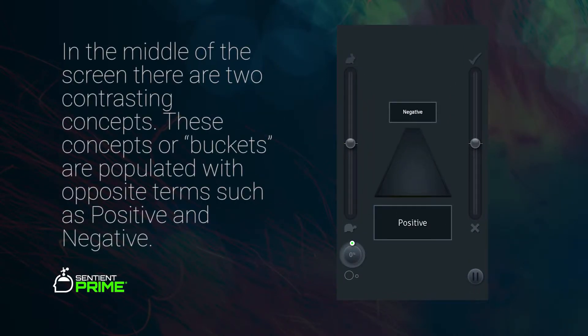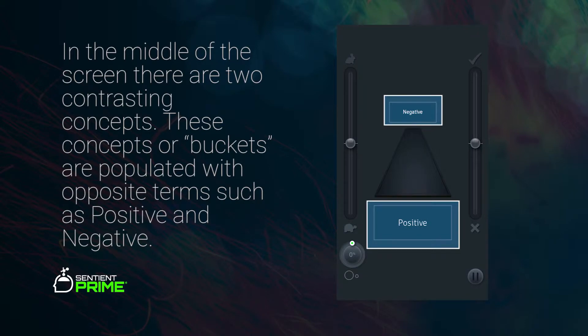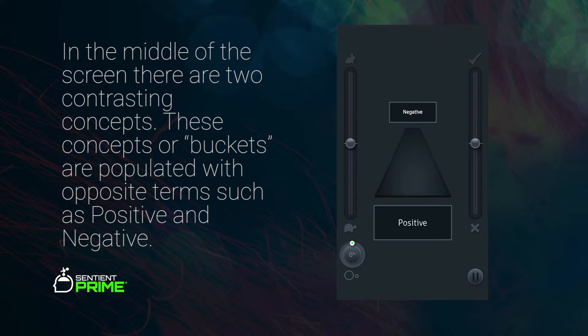In the middle of the screen, there's a three-dimensional display of two contrasting concepts. These concepts, or buckets, are populated with opposing terms such as excitement versus disgust, or modern versus old-fashioned, or even brand X versus not brand X. The three-dimensional display instills an approach-avoidance framework which improves the platform's ability to isolate the implicit signal. Instinctually, we want to bring things we feel positively about towards us, and things we feel negatively about we want to push away from us.